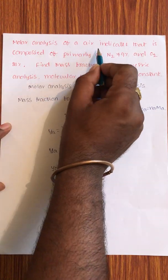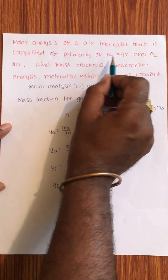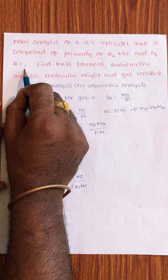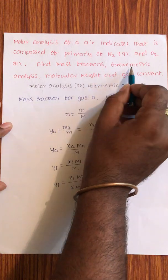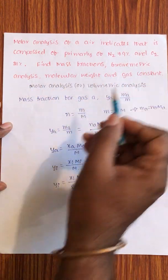Molar analysis of air indicates that it is composed primarily of nitrogen 79% and oxygen 21%. Find mass fractions, gravimetric analysis, molecular weight, and gas constant.